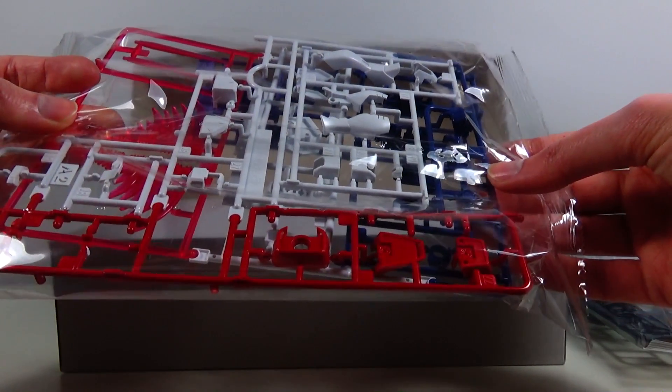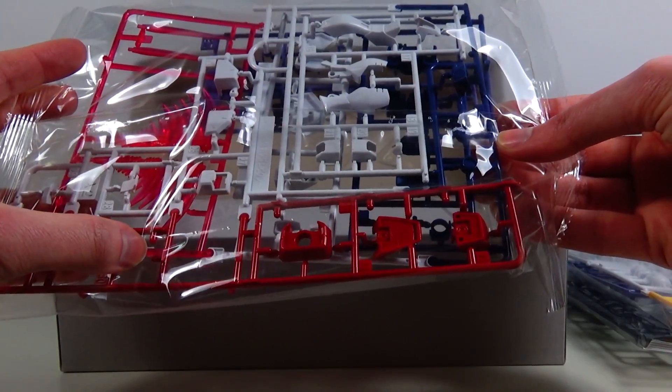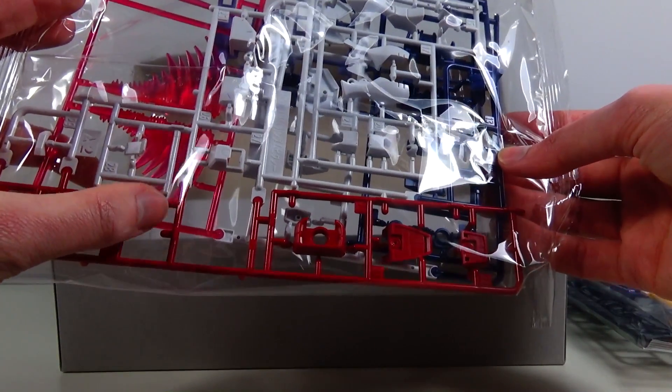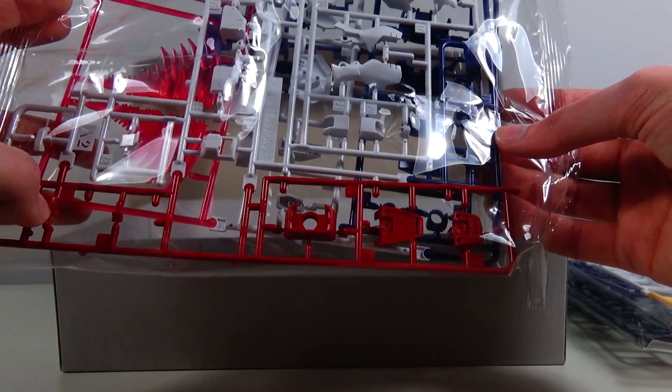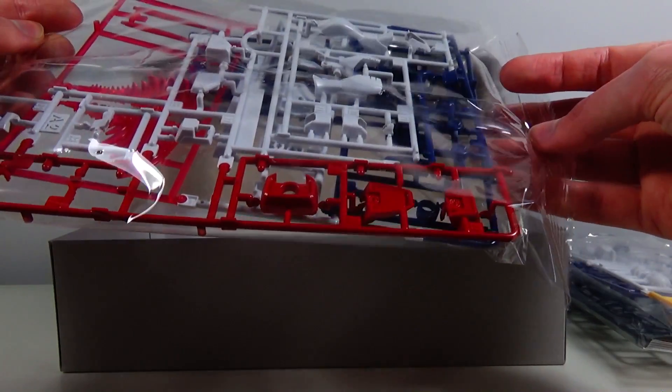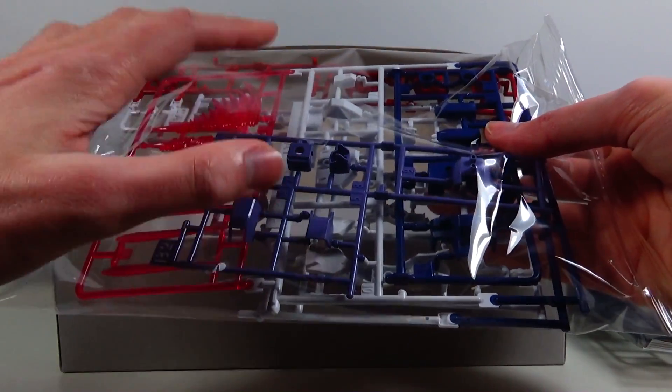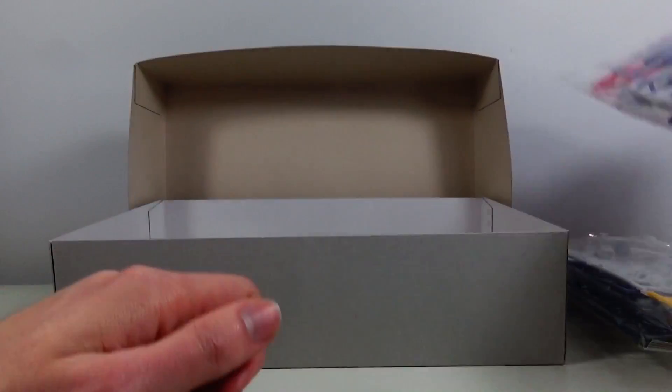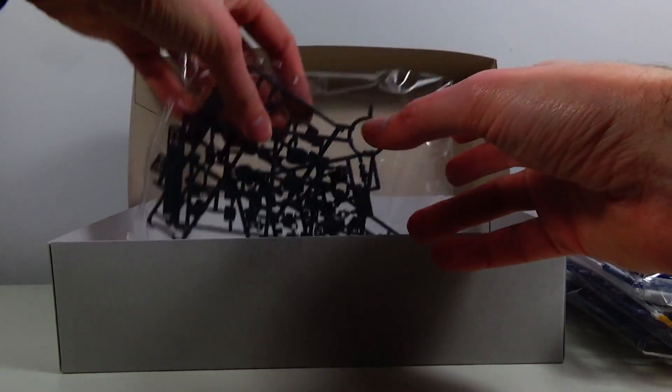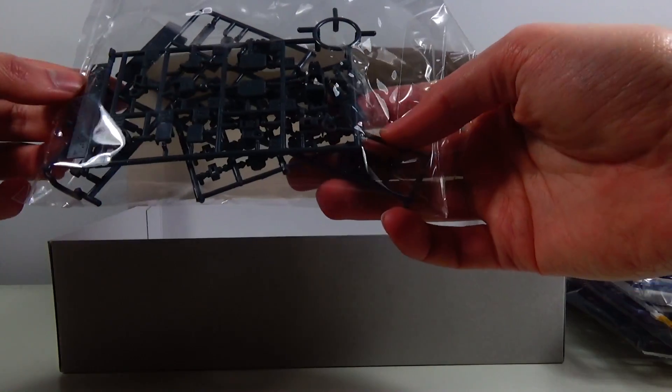I thought there was a piece missing here because I saw the peg sticking out, but nothing to them. Anyways, what was I saying? So yeah, it would be cool if more high grades came with like these kinds of effect parts, or even like how the Damashis come with thruster effect parts.